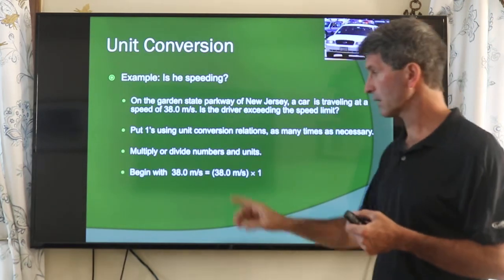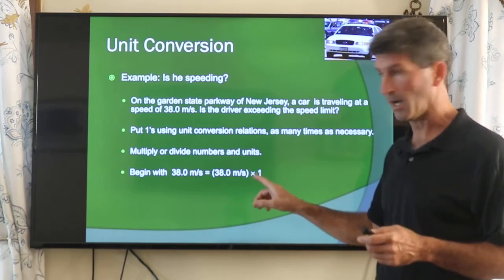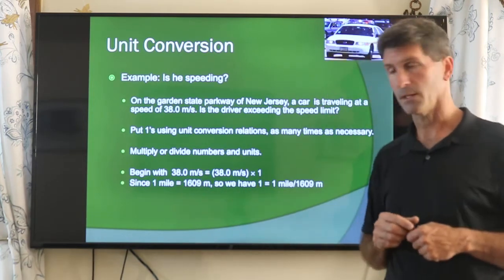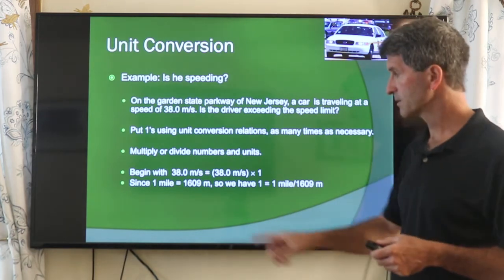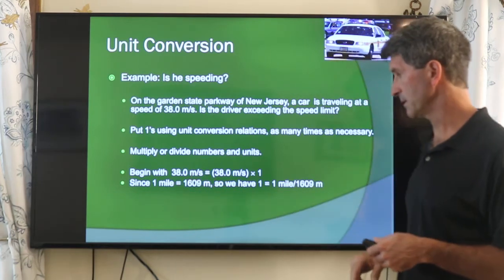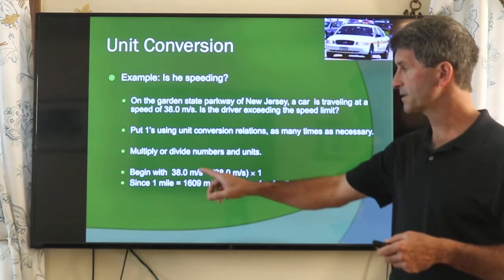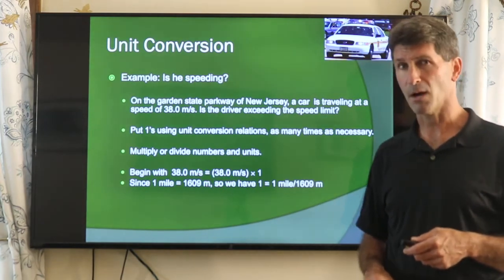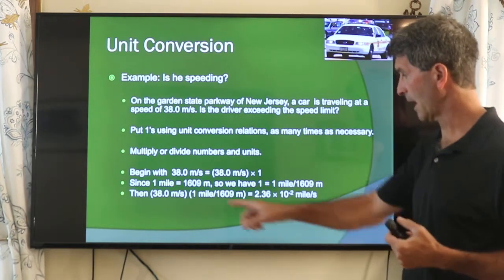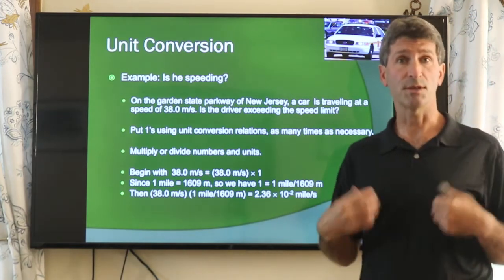We begin with our SI unit and multiply it by 1, which becomes a fraction. We know that 1 mile is 1609 meters. I want to get rid of the meters and put miles in, so I multiply by that fraction. But what that does is, instead of giving me miles per hour, it gives me miles per second — I don't want that. So I need to do another conversion. That gives me 2.36 × 10⁻² miles per second, or 0.0236 miles per second, which won't help me read my speed limit sign.